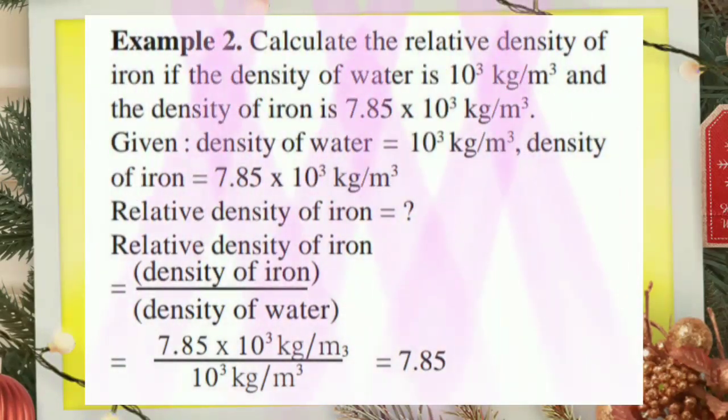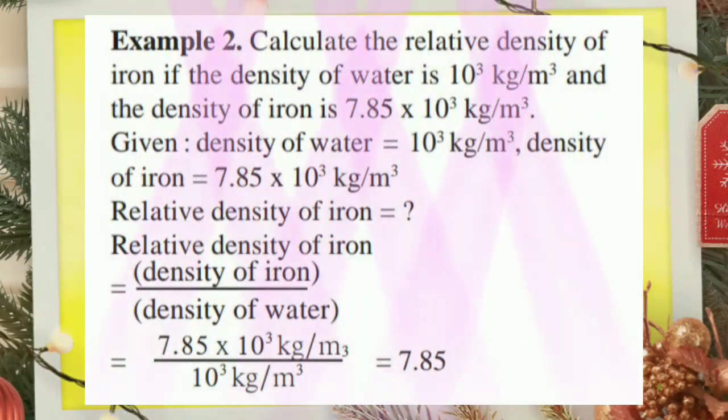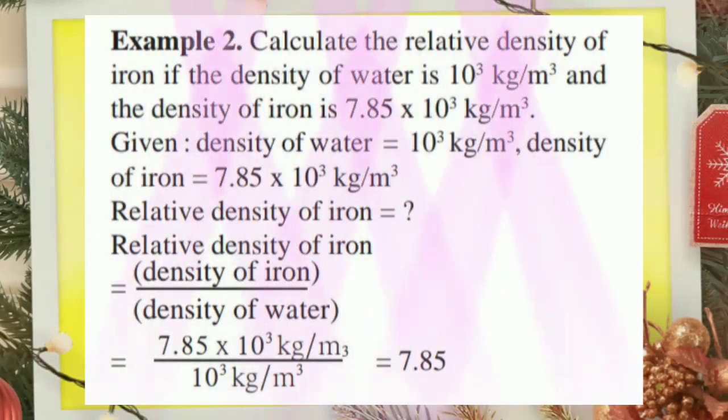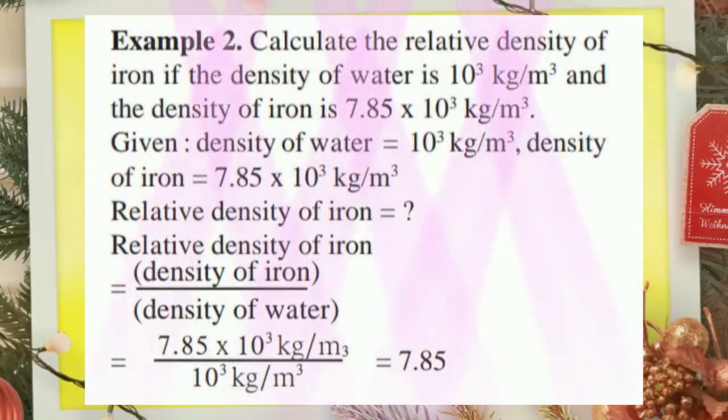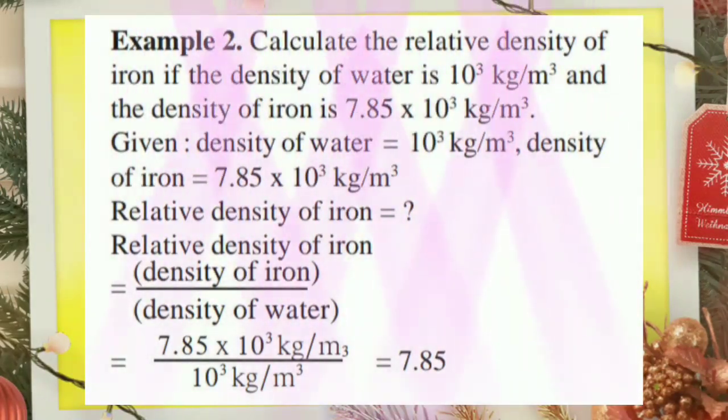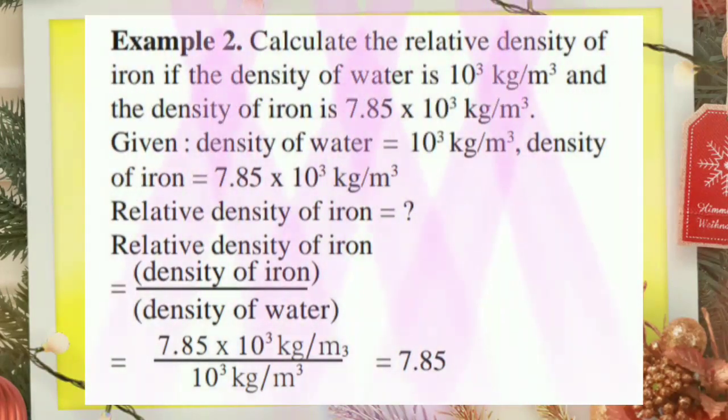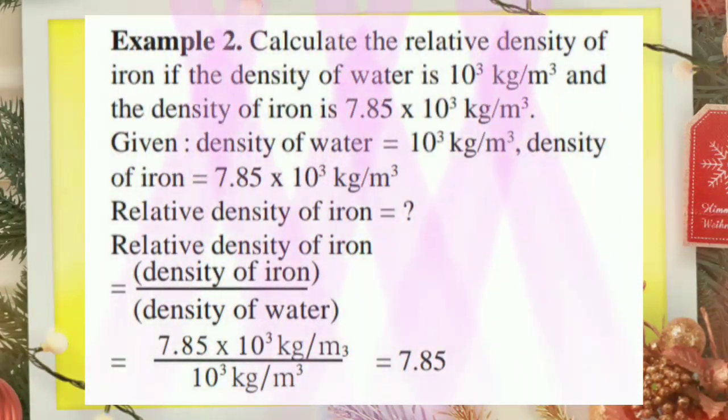Calculate the relative density of iron if the density of water is 10 raise to 3 kg per meter cube and the density of iron is 7.85 into 10 raise to 3 kg per meter cube. Here again, density is given, so density of iron upon density of water, that is 7.85 into 10 raise to 3 kg per meter cube upon 10 raise to 3 kg per meter cube. Answer is 7.85.